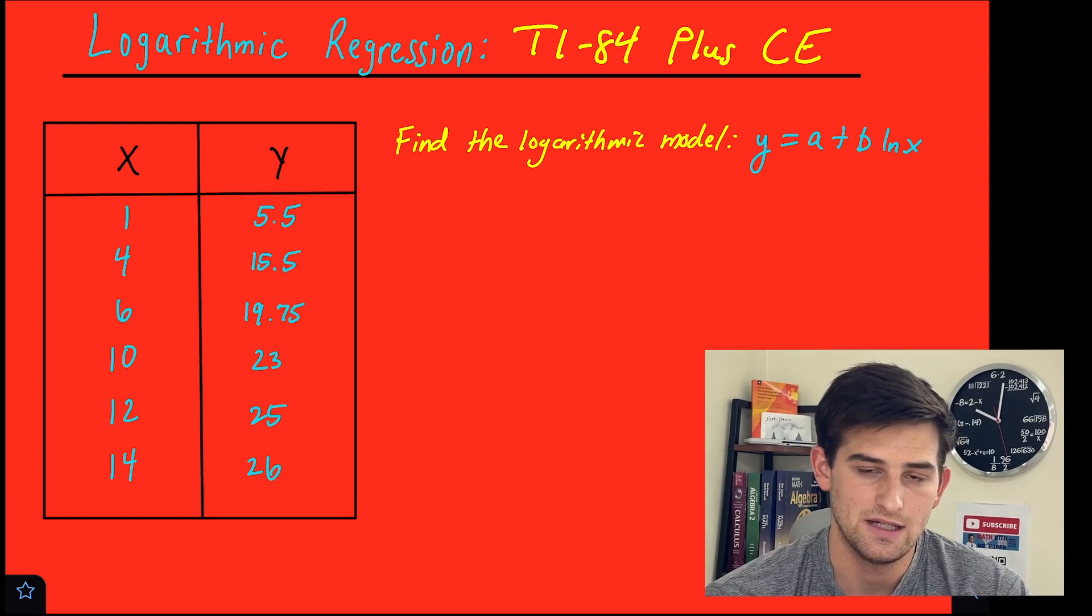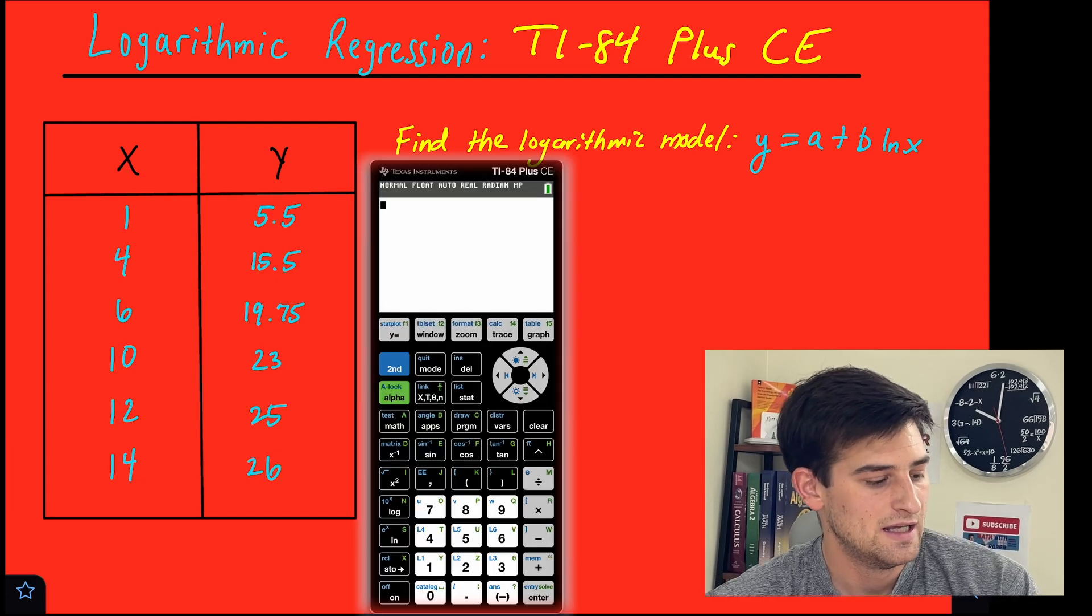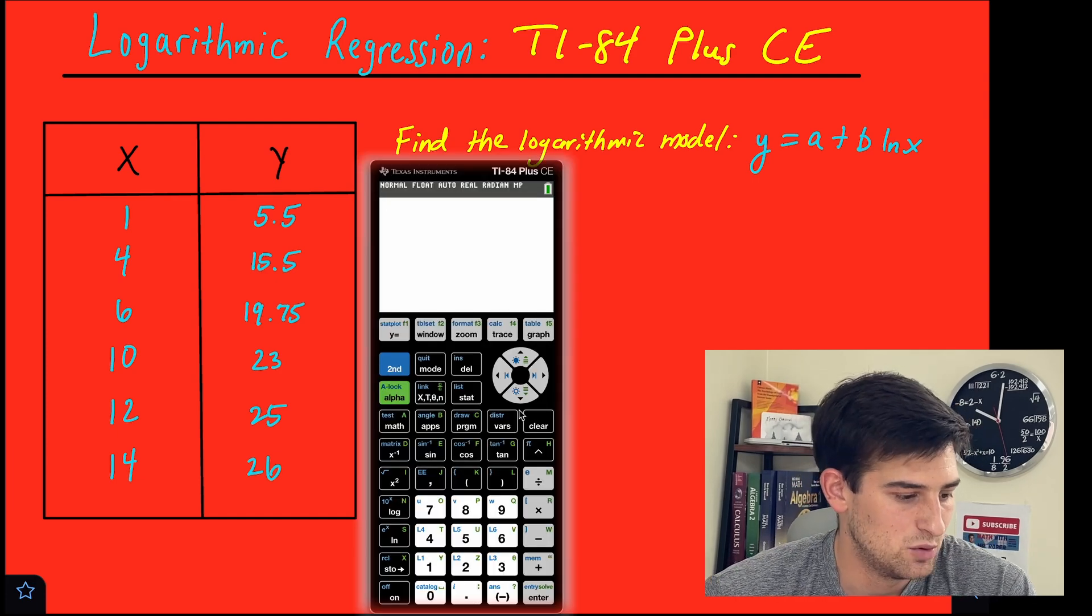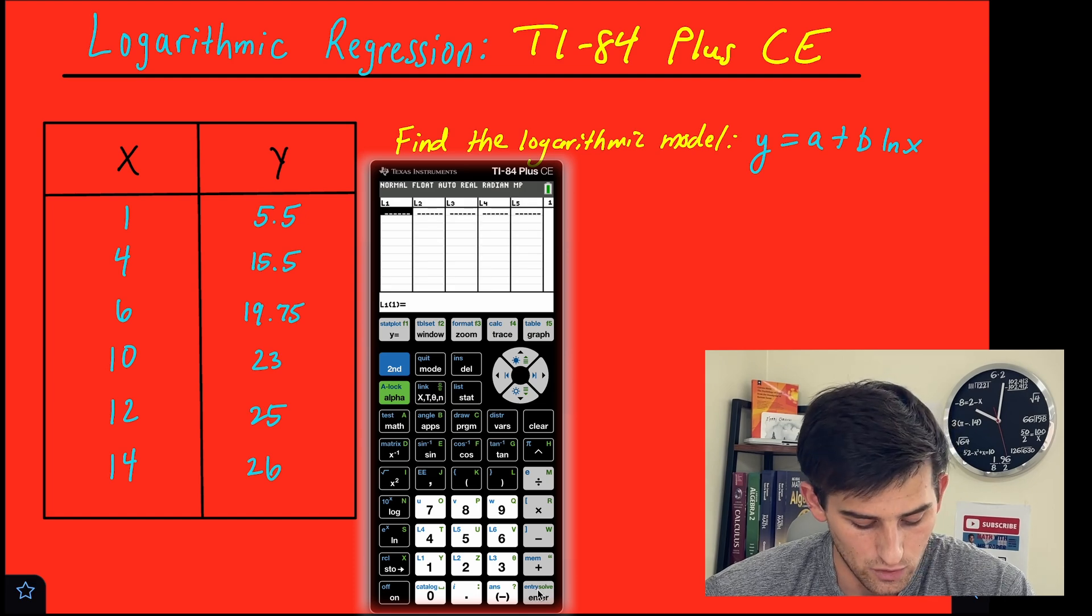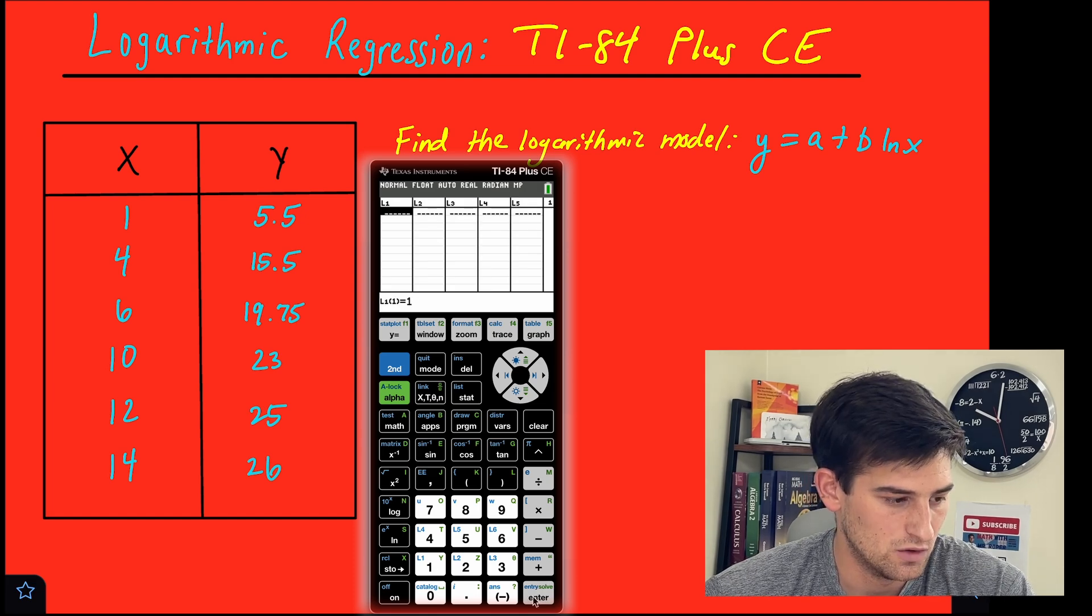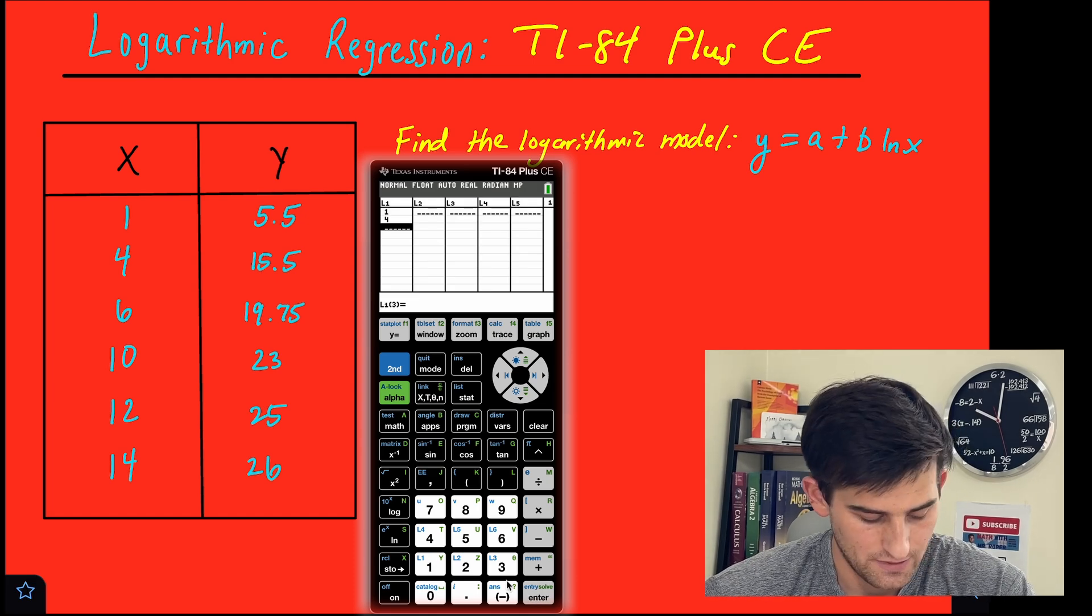So I'm going to bring my TI-84 Plus CE graphing calculator onto the screen right now, and let's go ahead and plot these points. So I'm going to go in here to stat and edit, and now for L1, we're going to type our x values. So that's 1, 4, 6, 10, 12, 14.